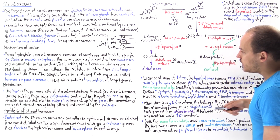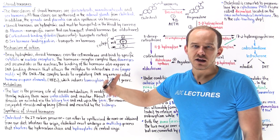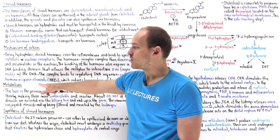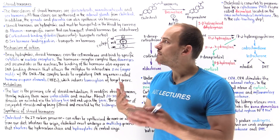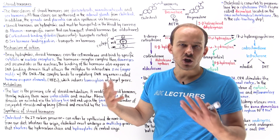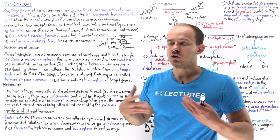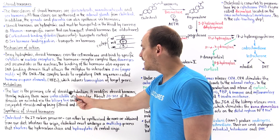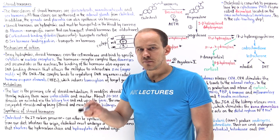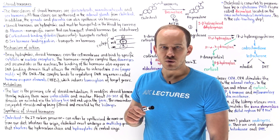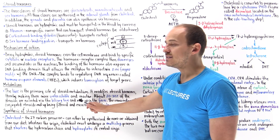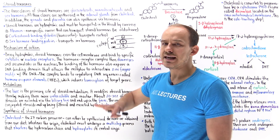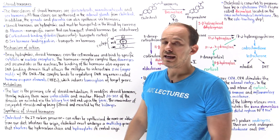Once steroid hormones carry out their function, their breakdown and metabolism occurs within the liver. The liver modifies these steroid hormones by adding sulfate groups or glucuronic acid, making the molecules more water-soluble and inactivating them. About 20 to 30 percent of these metabolized steroid hormones are excreted via the biliary tree into the feces, and the remaining 70 to 80 percent are excreted via the kidneys in the urine.